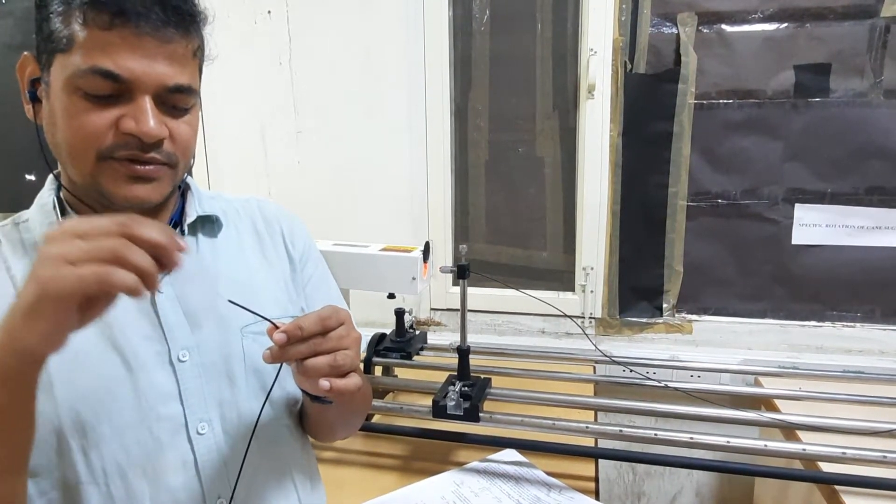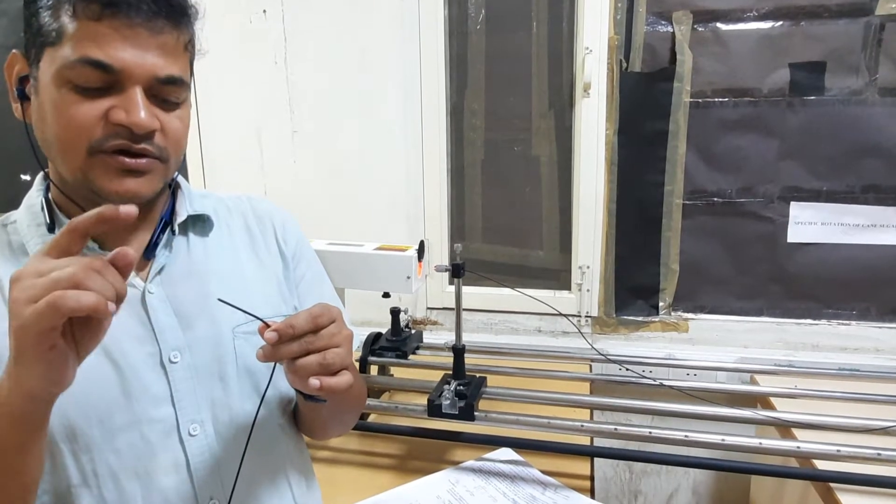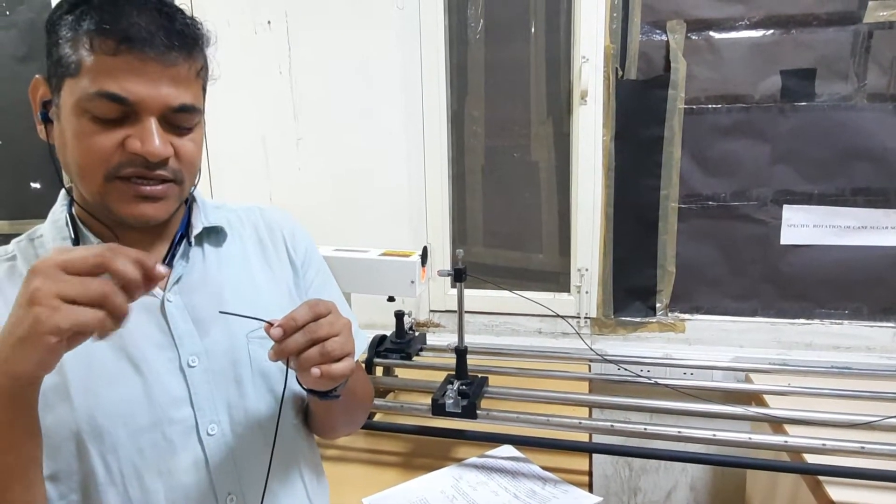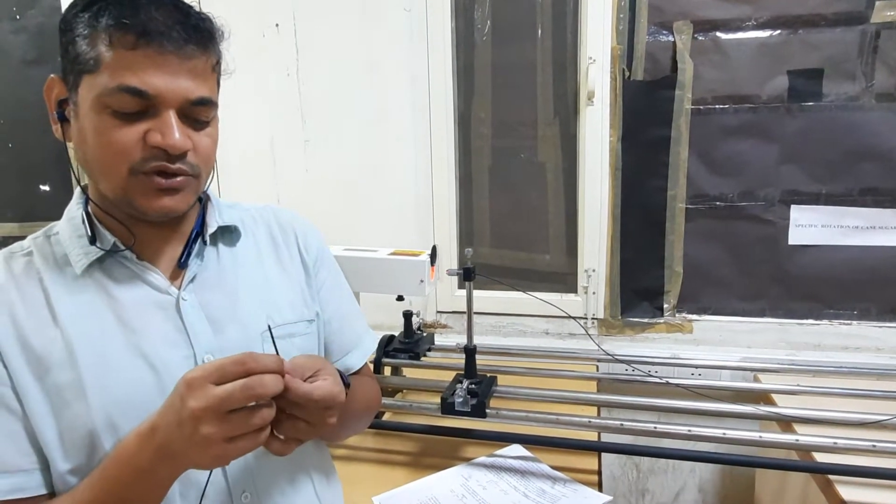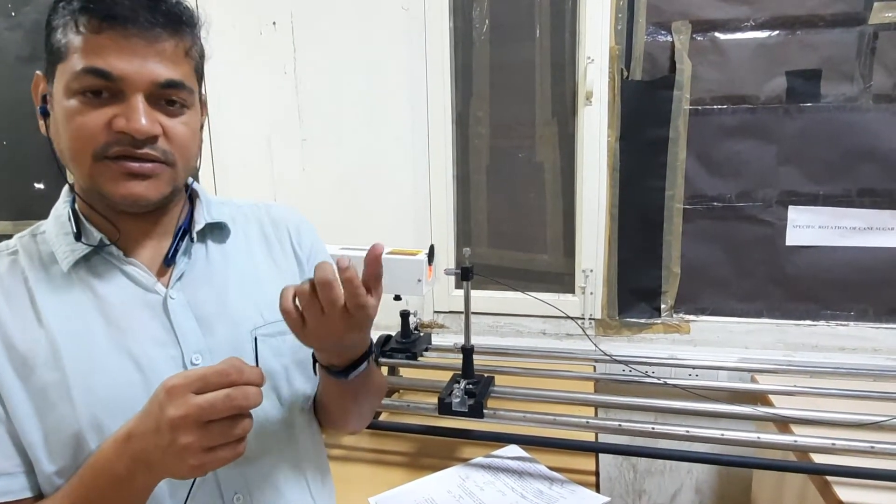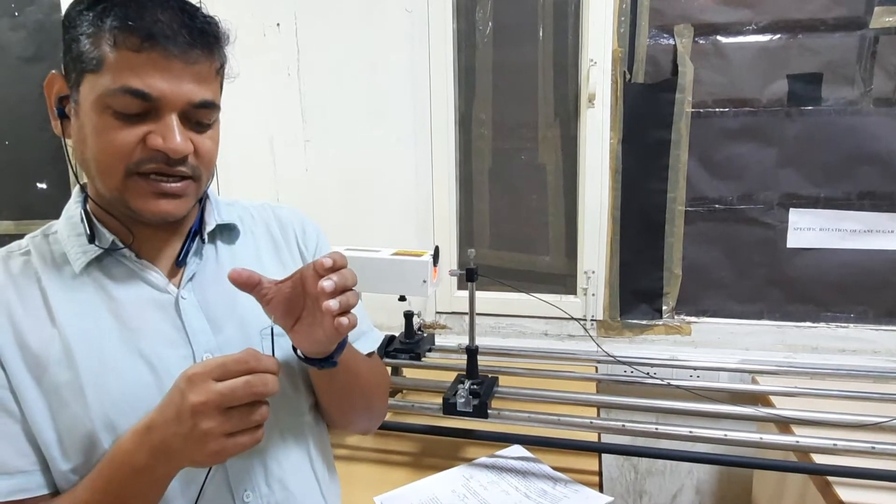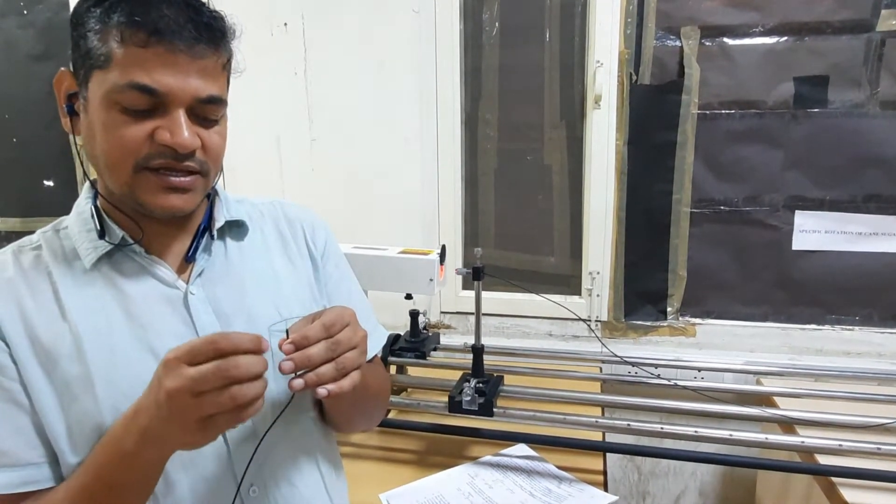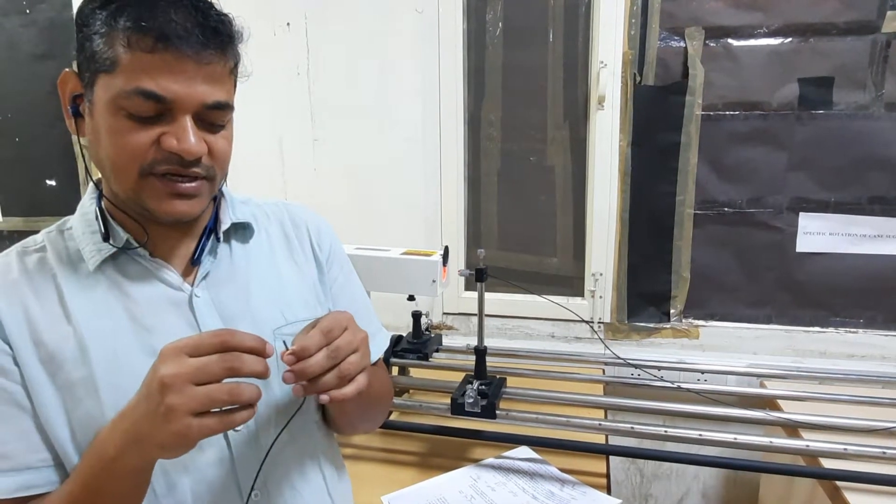One is the outer one called the cladding and the inner one is called the core. The outer one, the cladding, has a lower refractive index and the inner one has higher refractive index.